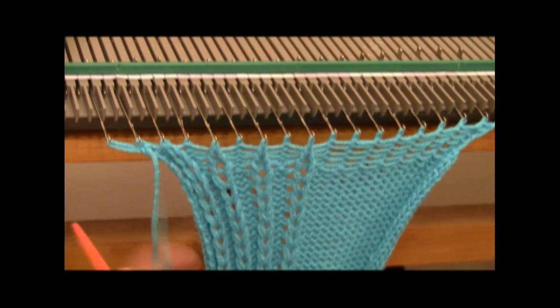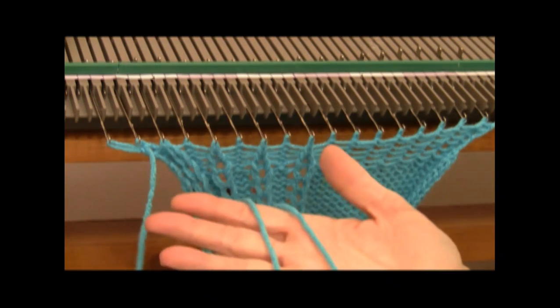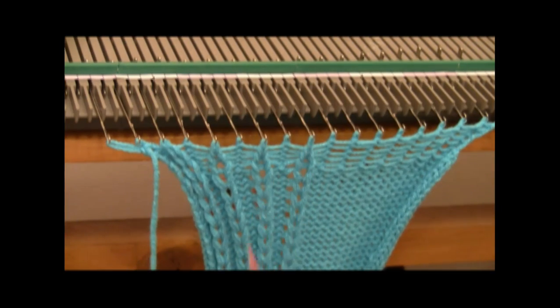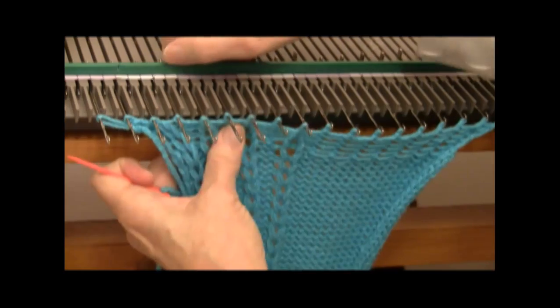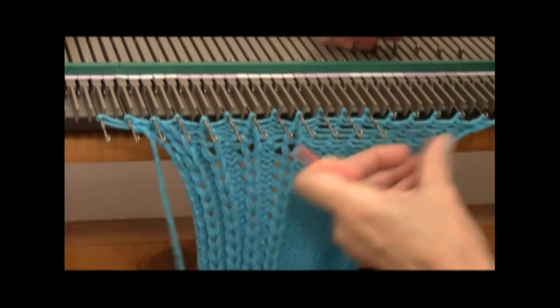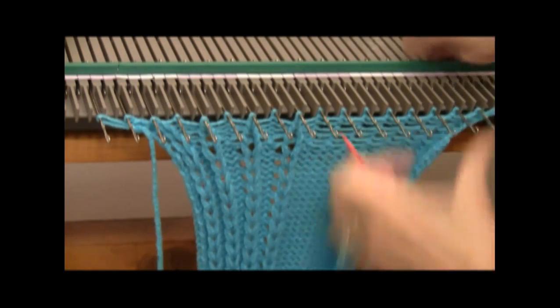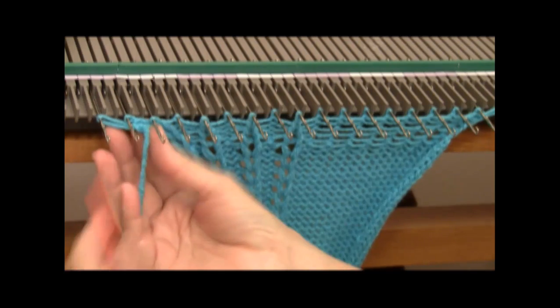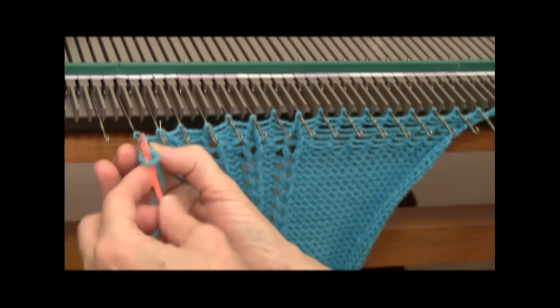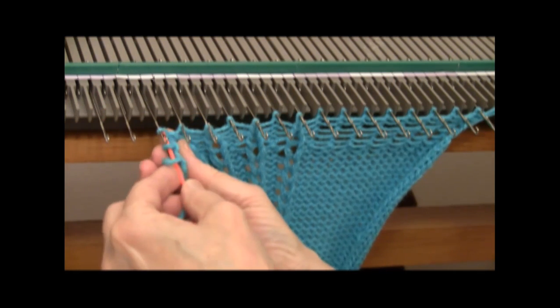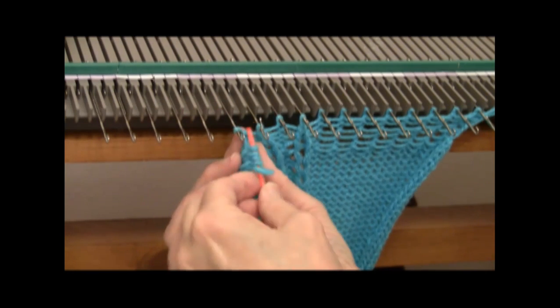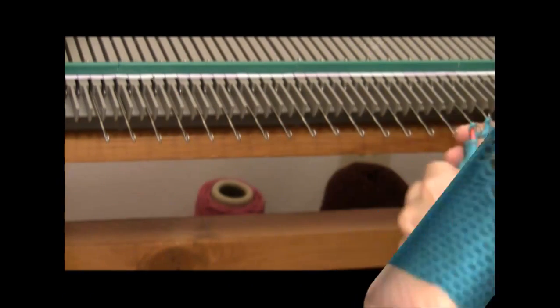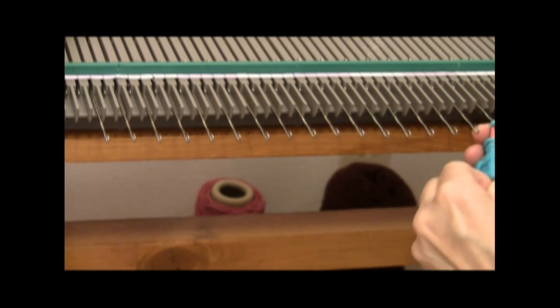My braids are done, and I've cut the yarn, leaving a long piece for seaming up later. And what I'm going to do is push the knitting back behind the latches and the needles forward, and then I can just pick the stitches off onto my yarn needle. When this thread is drawn up, it will make the rounded top of the mitten.